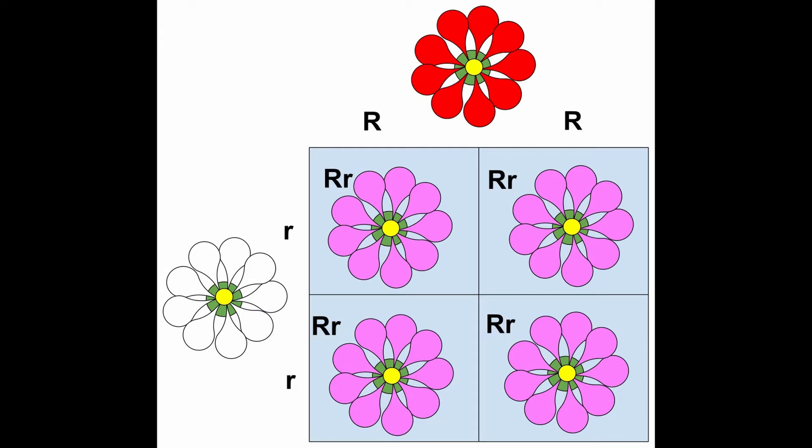For this example, I will use incomplete dominance, well visible in some plants. In this case, the crossing of two opposing homozygous individuals will give a uniform F1 generation, but the phenotype is clearly intermediate between the two parental phenotypes.